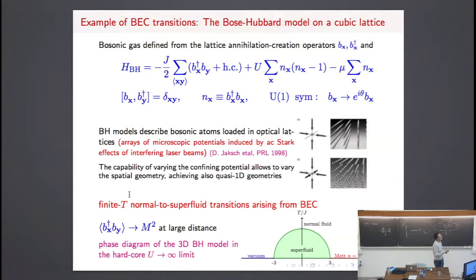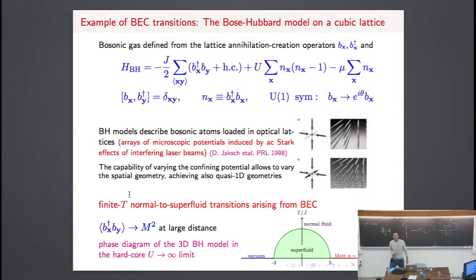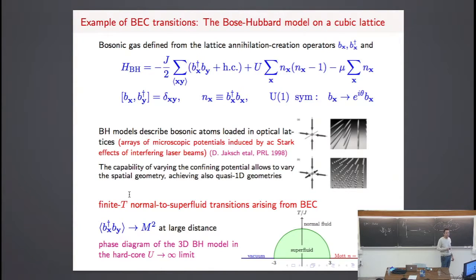For example, if you have bosons, you can capture the physics of a boson gas using this Hamiltonian, where we have introduced a field b which is an annihilation/creation operator satisfying the standard commutation rules. This local coupling model is quite realistic — they use this and compare with experiments, and there is good agreement. The local interactions include a density-density term and a next-nearest interaction.